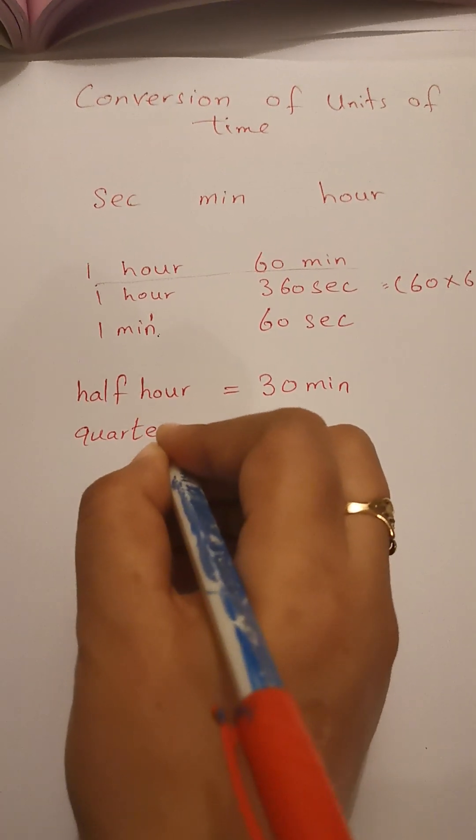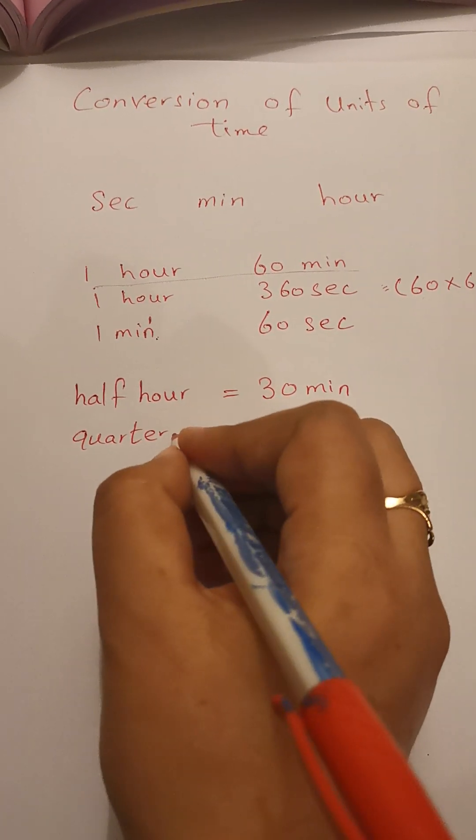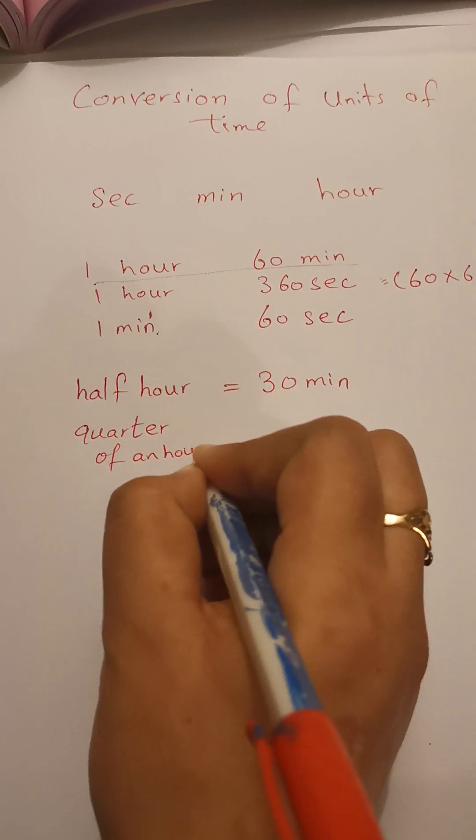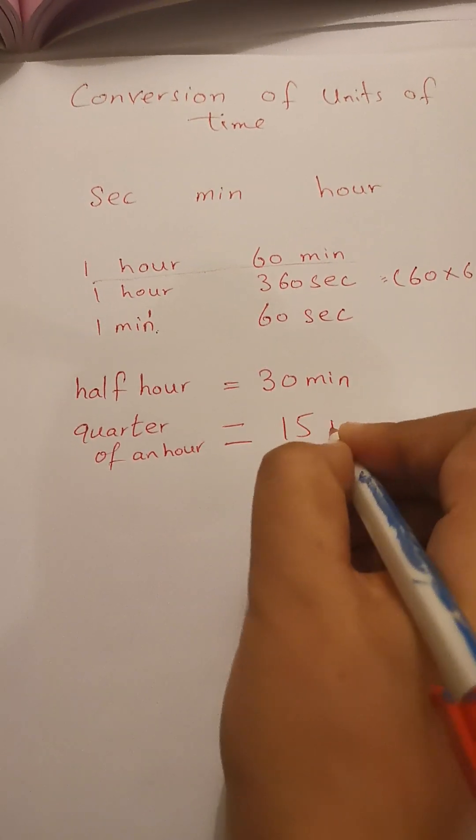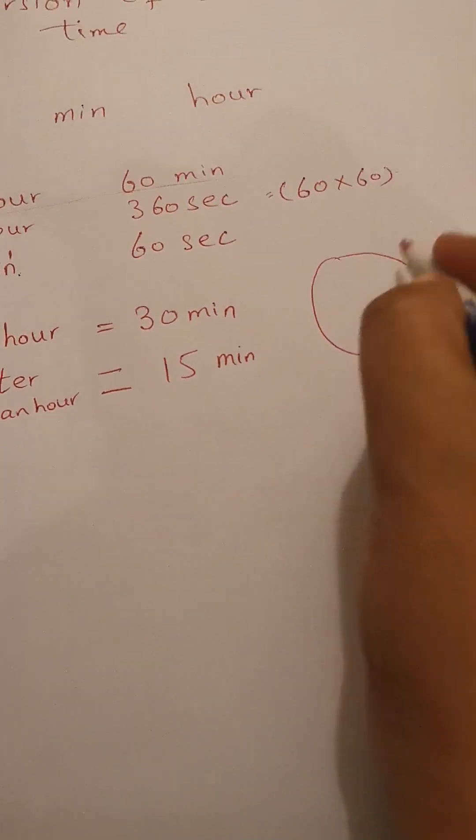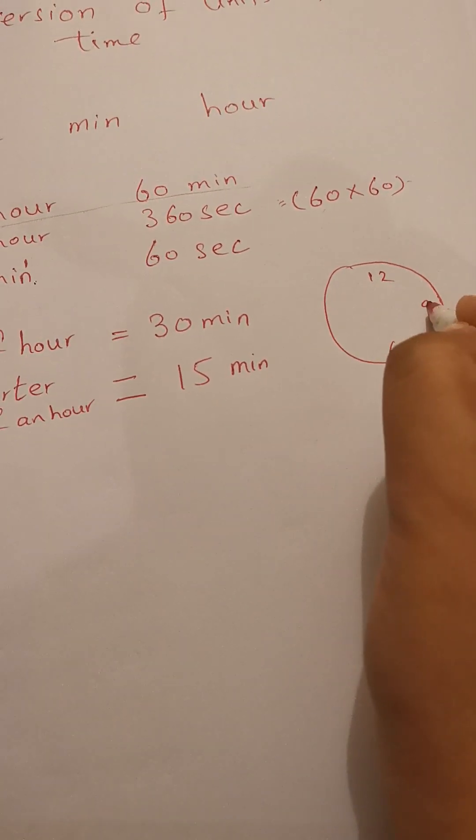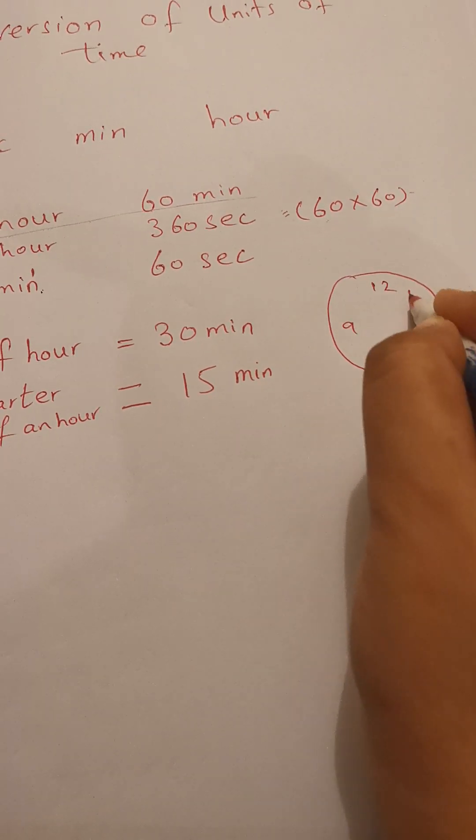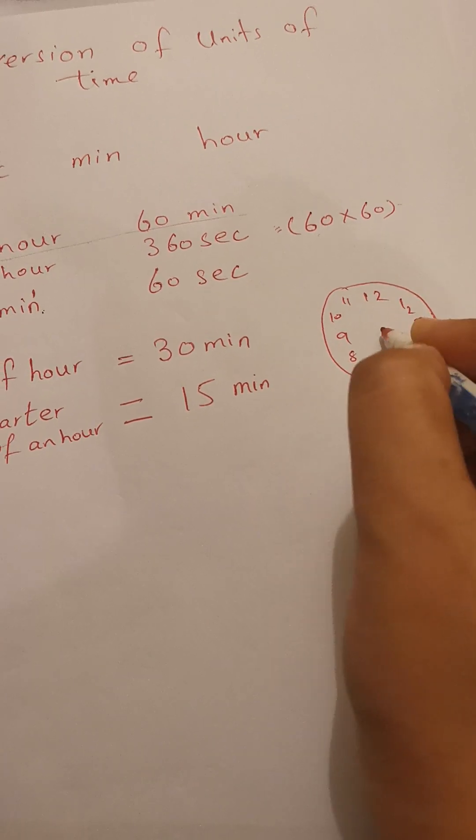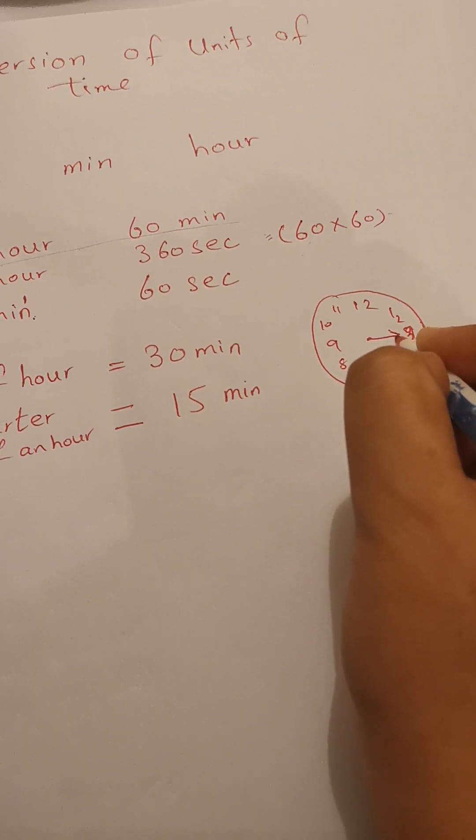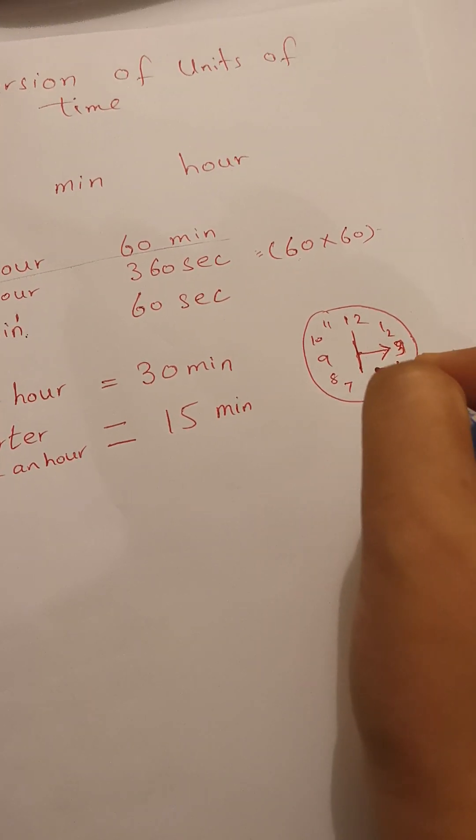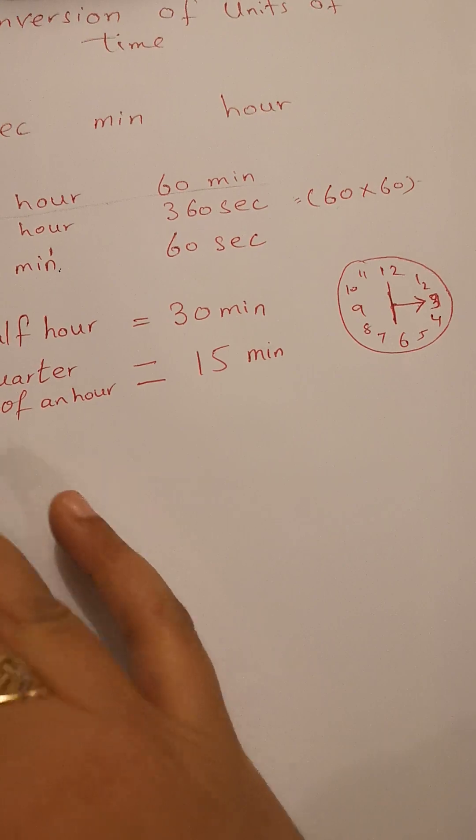the fourth part of a thing. So quarter of an hour is equal to 15 minutes. See, it's a clock - 12, 6, 9, 3, then 1, 2, 4, 5, 7, 8, 10, 11. So this is the quarter part, meaning 15. This is the half part, meaning 30. Then the